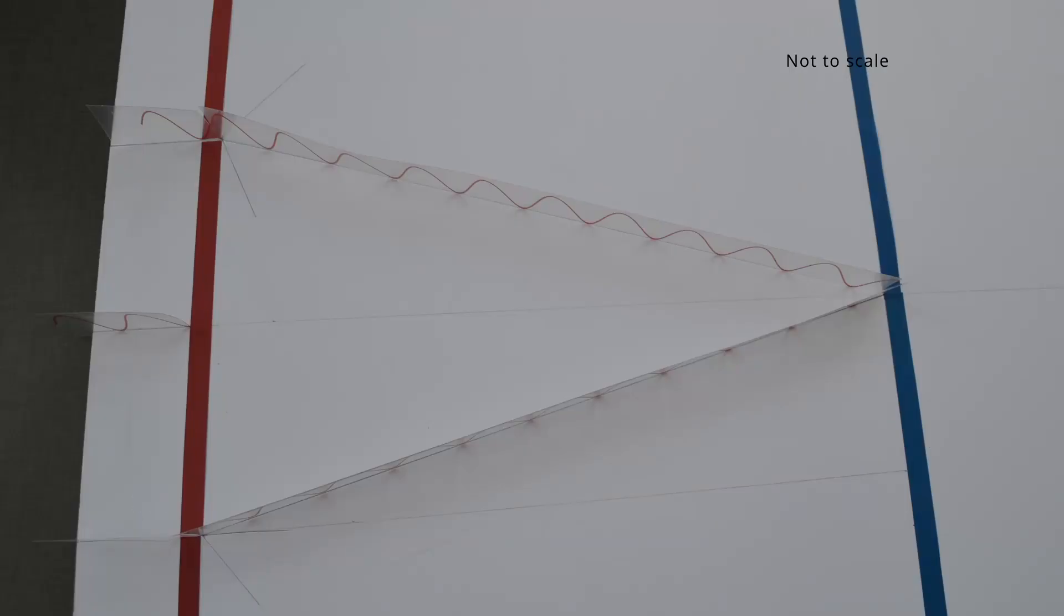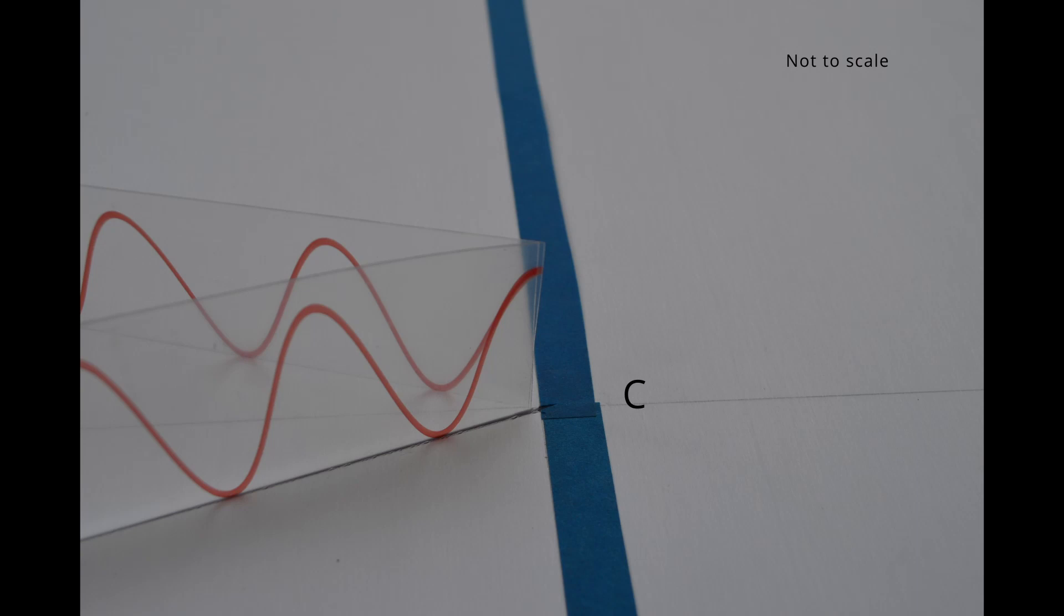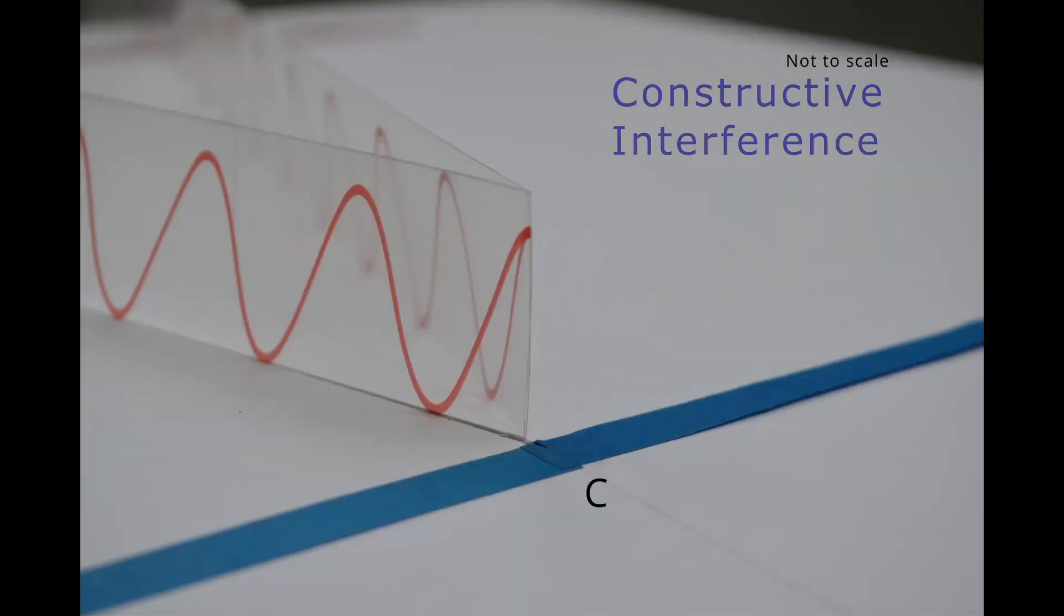As the source is monochromatic, both waves are in phase at the point sources S1 and S2. When waves meet at the point C on the screen, they are still in phase. Constructive interference takes place at this location, a bright region on the screen.